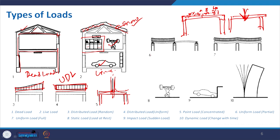Picture 6 shows UDL applied partially on a continuous beam structure spanning over three columns. Load is applied to only part of the span, causing bending, and to counter it there is an upward-type bending reaction. When the load is applied fully versus partially, the behavior changes. We will discuss this further when we talk about beam-column structures in detail.